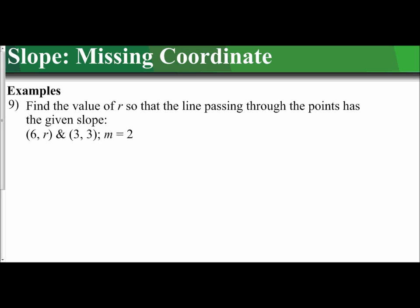If we look at what's given to us, it says find the value of r so that the line passing through the points has the given slope. The points are (6,r) and (3,3) with the slope of 2.